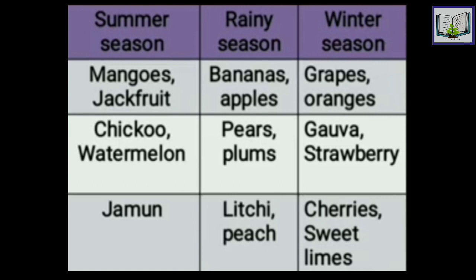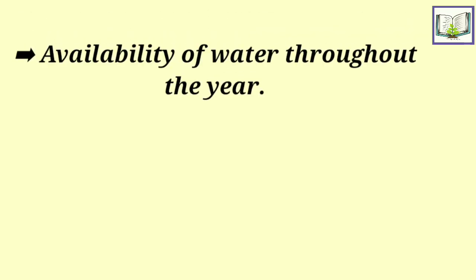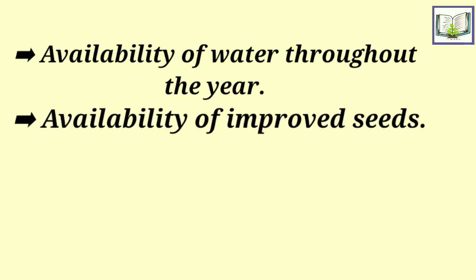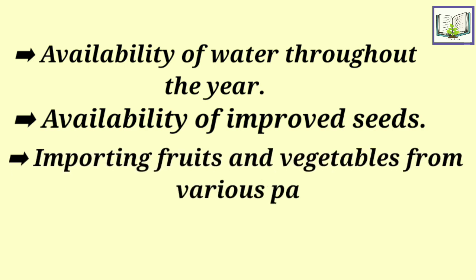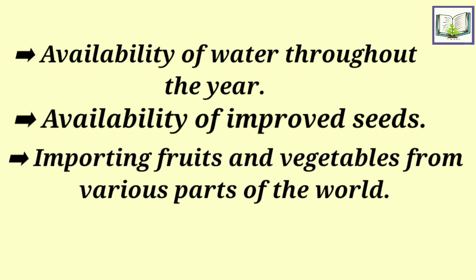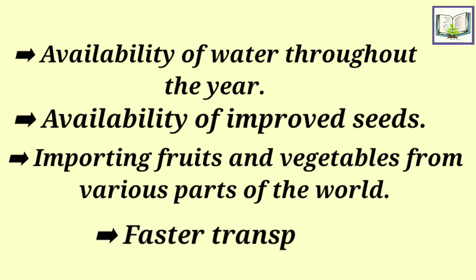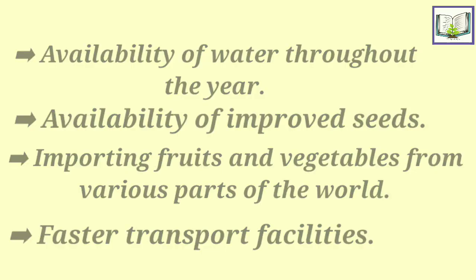Some fruits and vegetables that were previously available only in a certain season are now available all year. The reasons for that are: availability of water throughout the year, availability of improved seeds nowadays, importing fruits and vegetables from various parts of the world, and faster transport facilities.